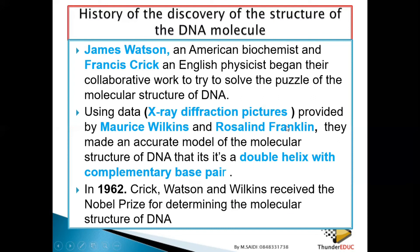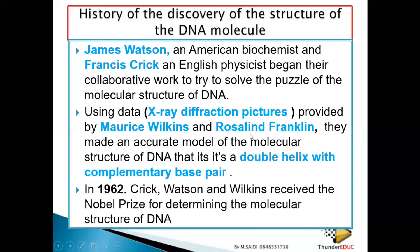Which year was DNA discovered? That is 1962. Which of the following obtained the Nobel Prize for the discovery of DNA? They can give you different options, so you have to know these names carefully because they can mix them up — for example, James Franklin or Morris Watson. These people don't exist in this context. The correct names are James Watson, Francis Crick, Rosalind Franklin, and Maurice Wilkins. You have to know them and don't confuse them.